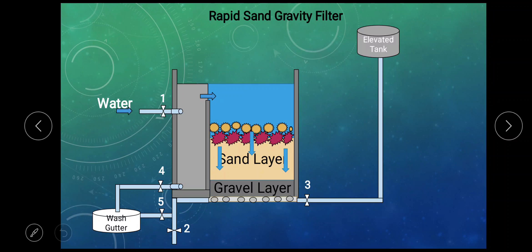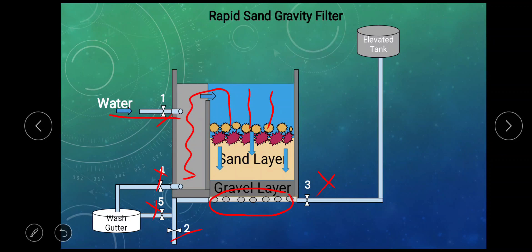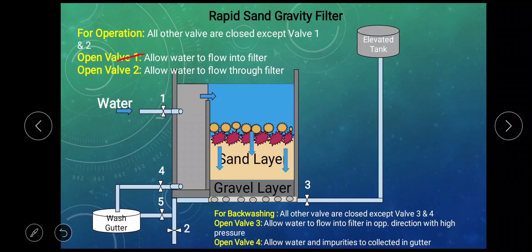This is the pictorial representation of rapid sand filter. During operation of rapid sand filter, only valve 1 and valve 2 are open and all other valves are closed. So water is injected from valve 1, which can percolate through the sand layer and is collected in the under drainage system. From the under drainage system, the filtered water may be extracted out from valve number 2. Valve 1 allows the water to flow into the filter. Valve 2 allows the water to flow out through the filter. As the operation proceeds, impurities may come up with the filter water, so it is very necessary to clean the filter at regular intervals.